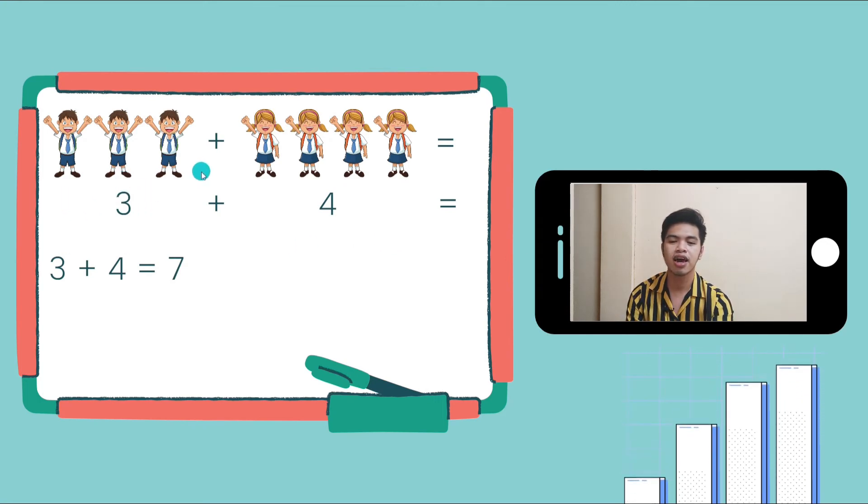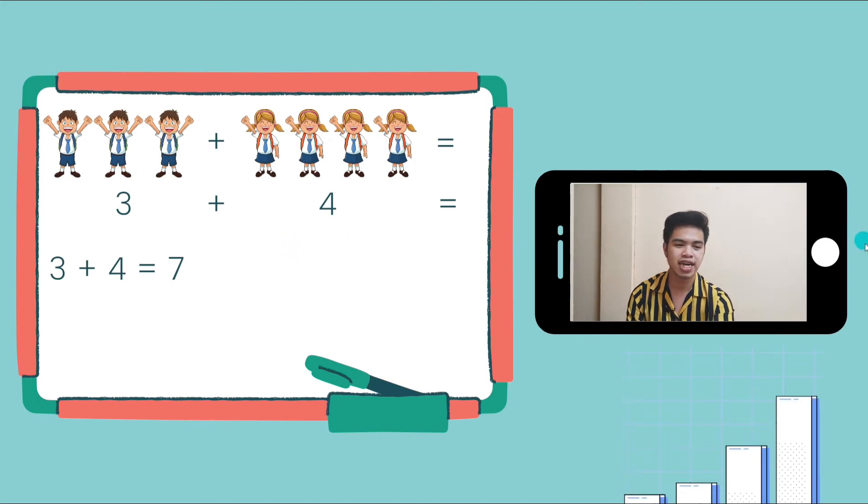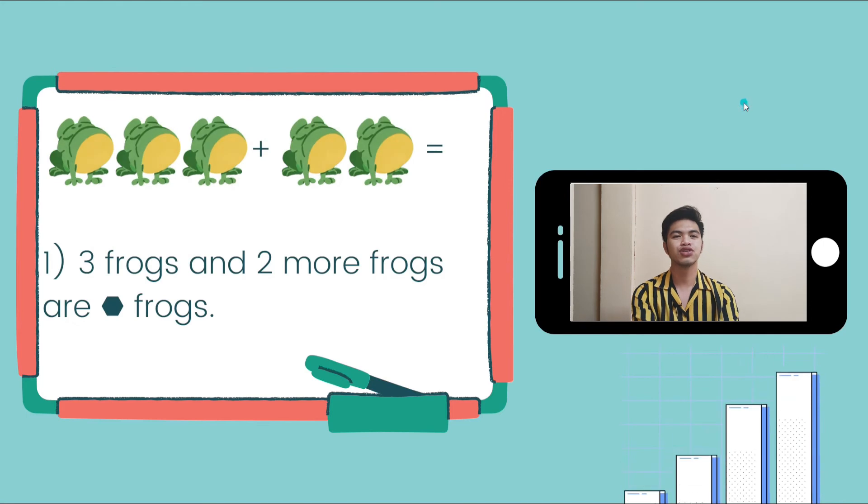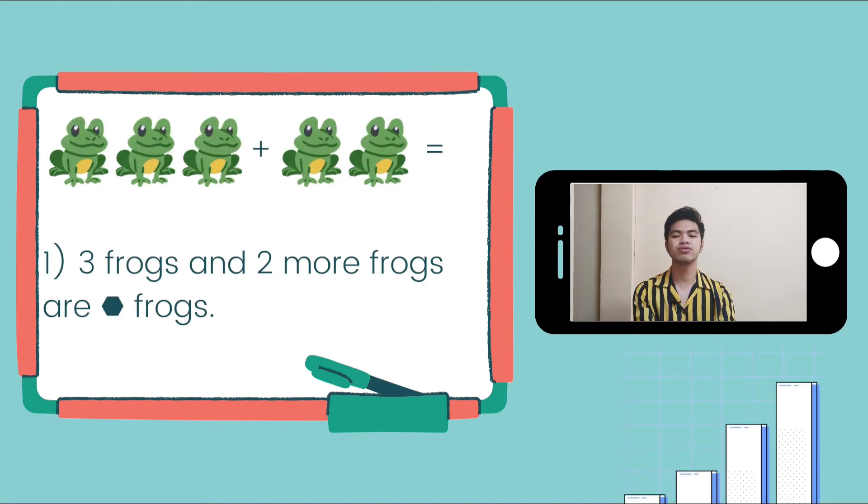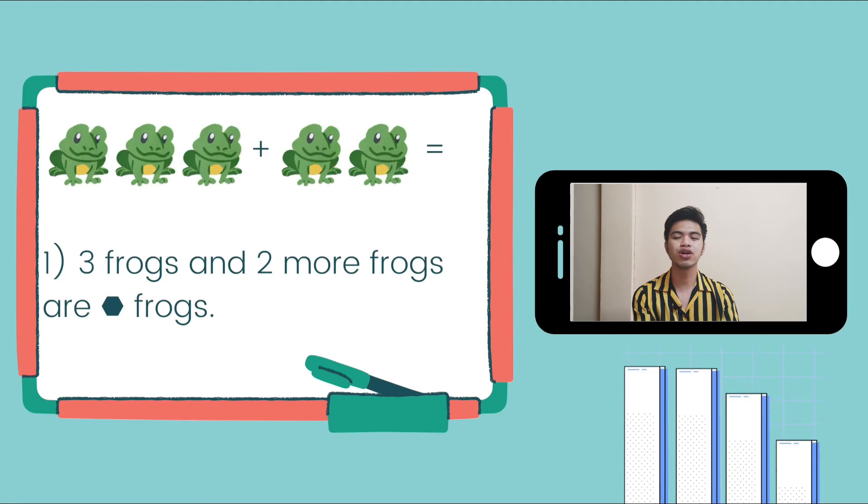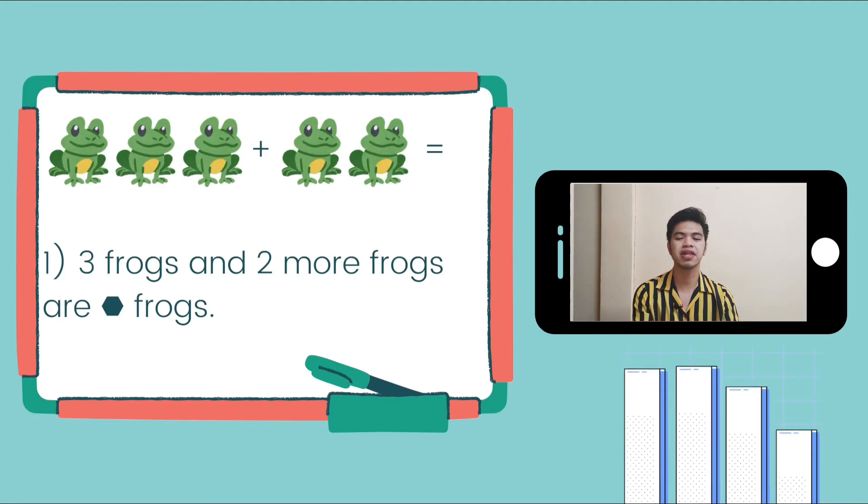One, two, three, four, five, six, seven. 3 plus 4 is equal to 7. So, now, I want you to open your book to page 57. Here, we're going to answer some problems.